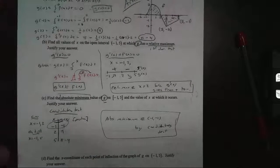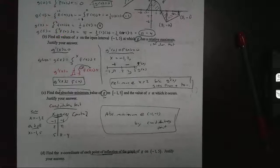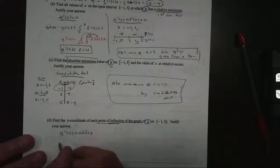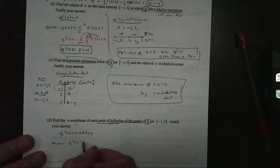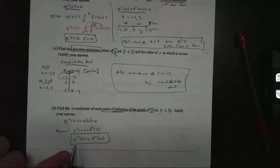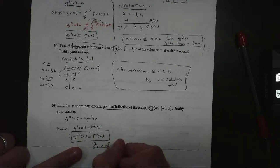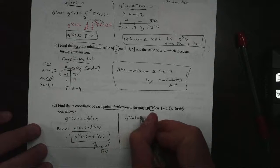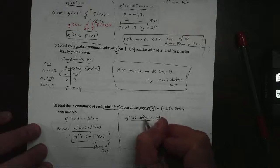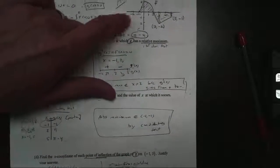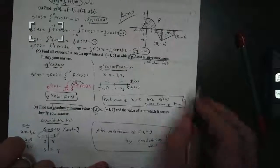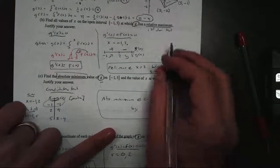The last question talks about points of inflection for g. A POI occurs where the second derivative is 0 or does not exist. We already know g prime of x equals f of x, so the second derivative g double prime of x equals f prime of x — we're going to look at the slopes of f. Setting f prime of x equal to 0: nowhere is the slope 0. But the slope is undefined at x equals 0, and does not exist at x equals 2 — there's a corner — and at x equals 3.